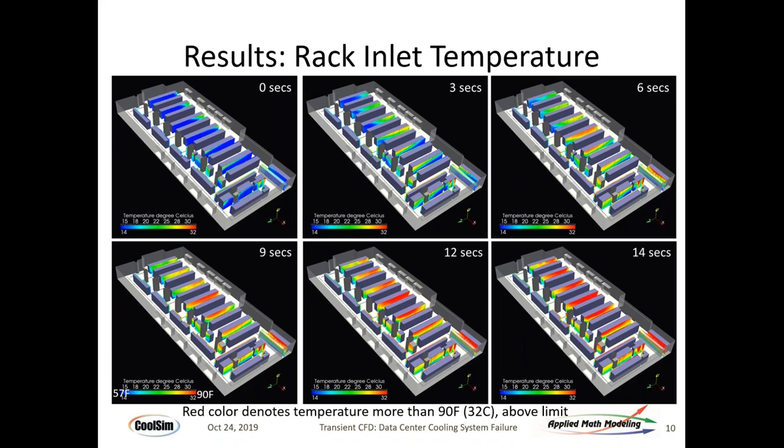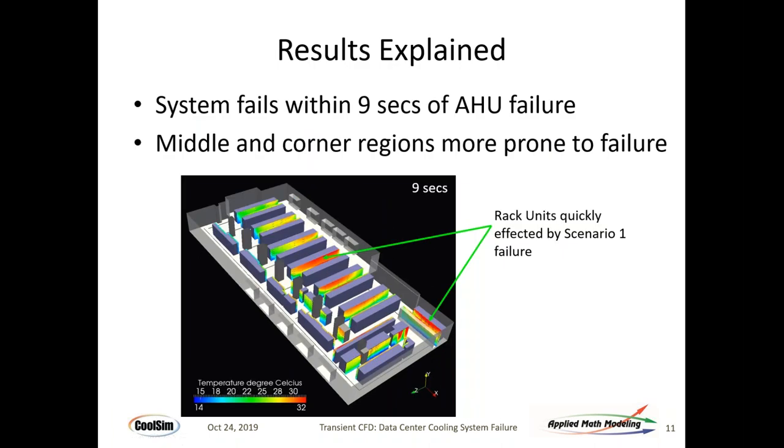Here are plots of rack inlet temperatures as a function of time. You'll notice at 14 seconds it's already hot. By the way, this is the case without containment — there are no containment systems being used here, so servers and racks have the opportunity to absorb cool air still in the room. If containment is in place, the situation gets worse because racks can't recirculate. This case isn't very interesting in the sense that you have no time — if you lose the air handlers and cooling system, it's game over in 14 seconds.